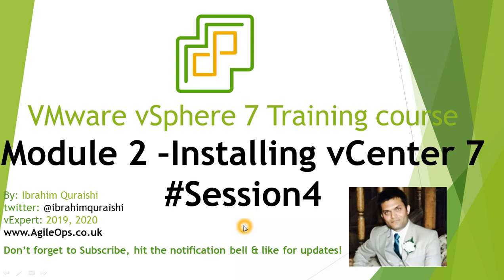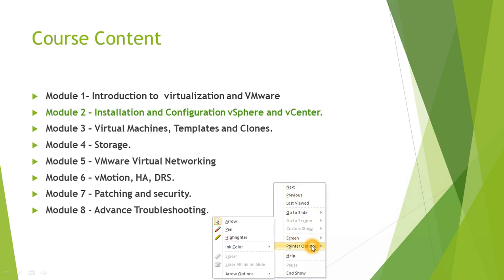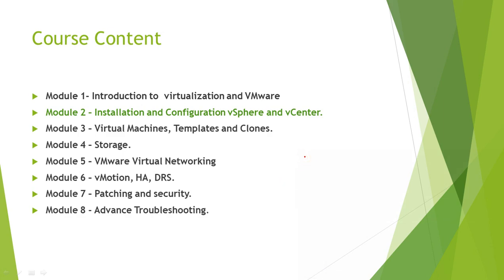Let's get started. This is module 2 which is installing and configuring vSphere and vCenter. We have done the vSphere installation previously, so check out those videos if you missed that. Today we are going to install vCenter on an ESXi host. In any greenfield environment you will have your first ESXi server deployed, and on this ESXi server you will install your vCenter Server.